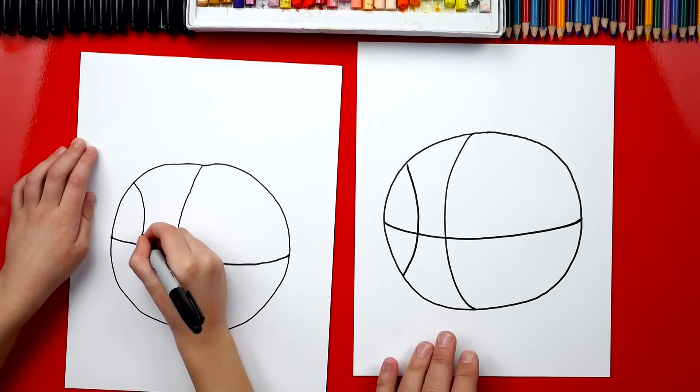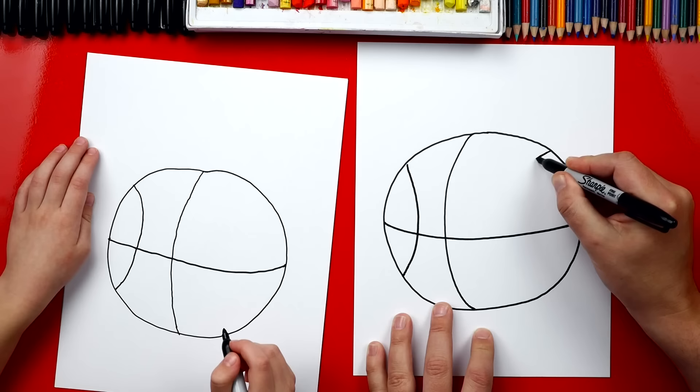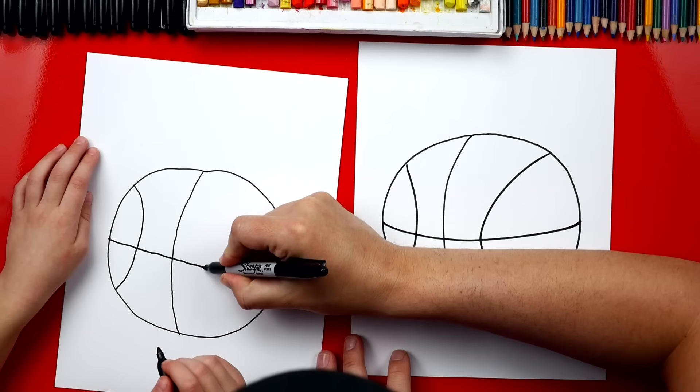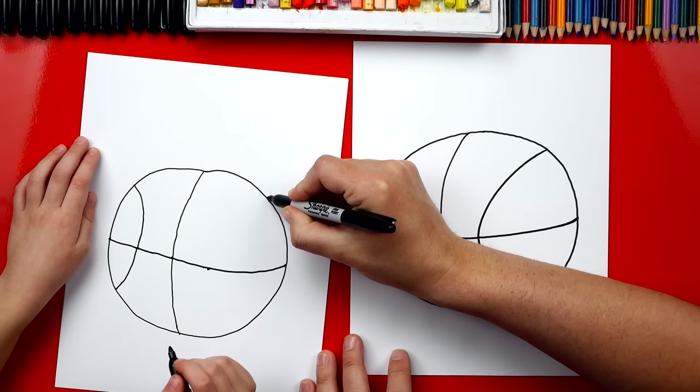Now we're going to draw the right side. Start over here and curve down and back. Look at this space. See how this space is that size? And this space matches. So we're going to try and cross in the same spot. See how we have distance there? We're going to cross right here. You can start up here, curve to there and then back.